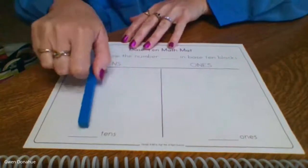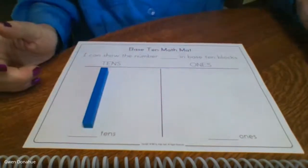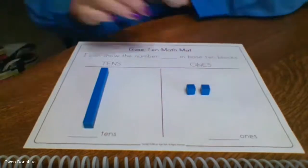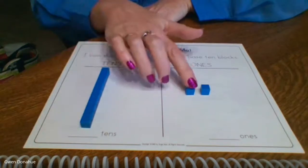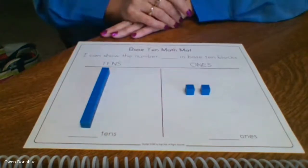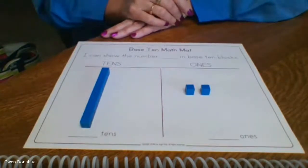So if I gave you a 10 and two ones, so here's 10, 11, 12. So right here I have one 10 and two ones. So that makes how many? Right. It makes 12.